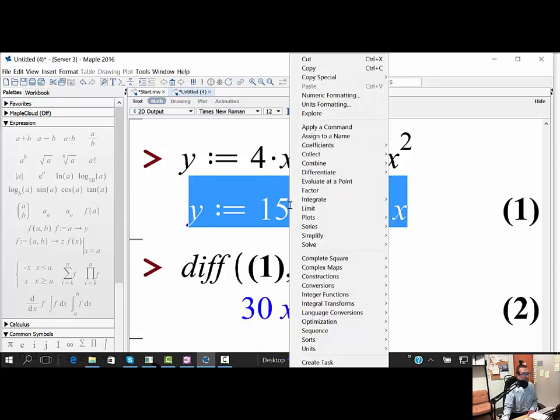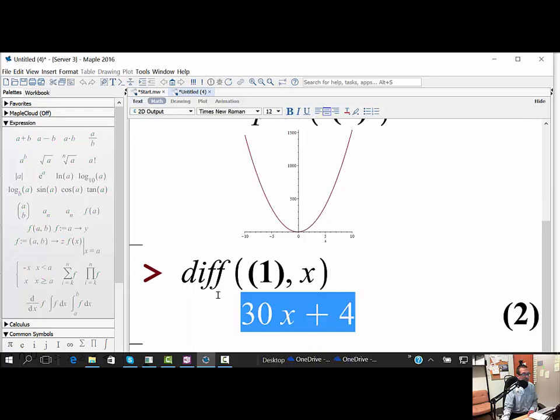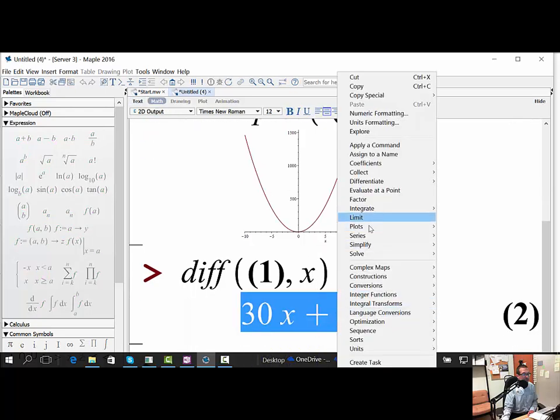I'm going to right-click on the original function and say plot 2D. It plots the curve right there. I'm then going to highlight the derivative function and plot it.